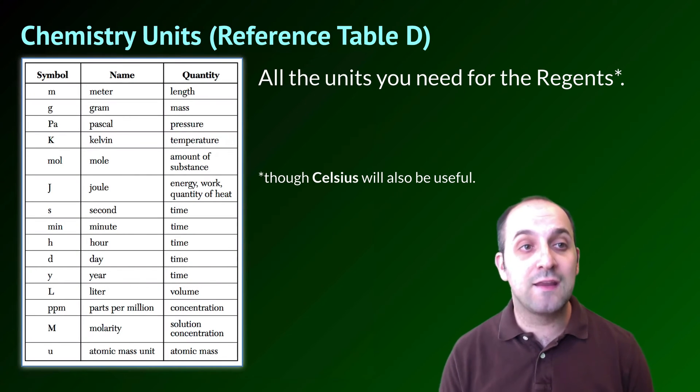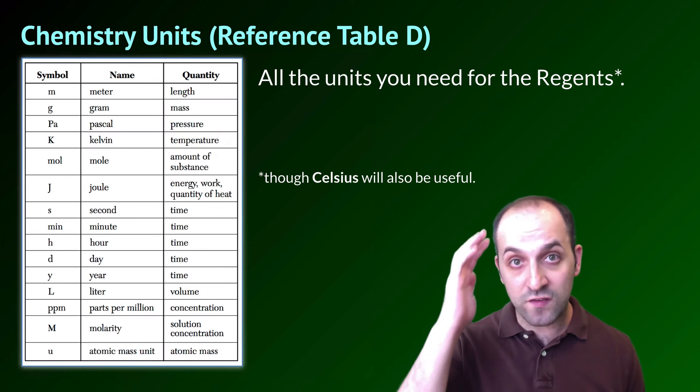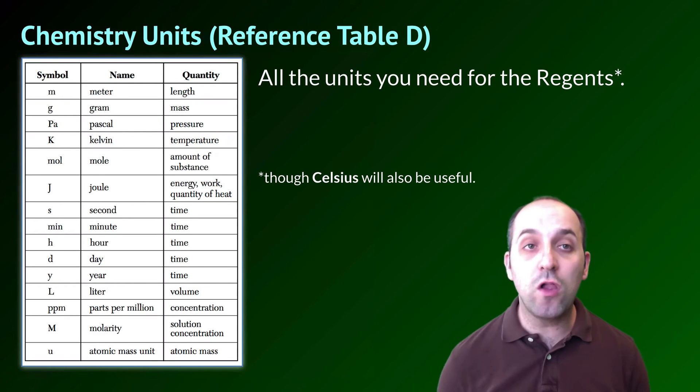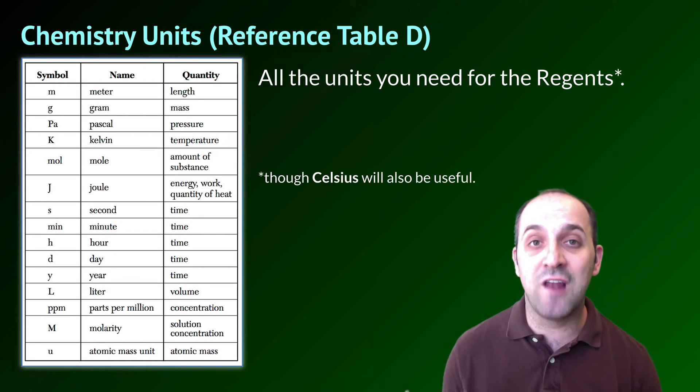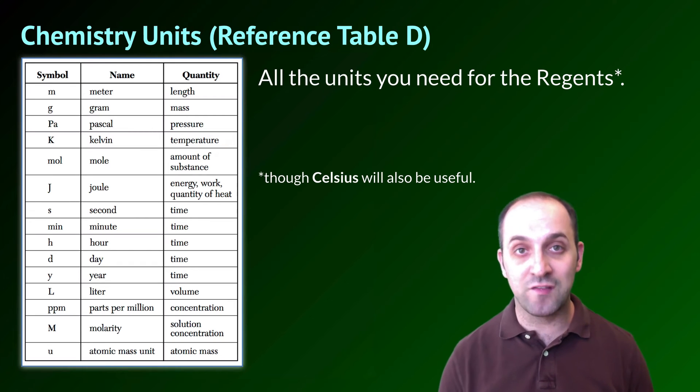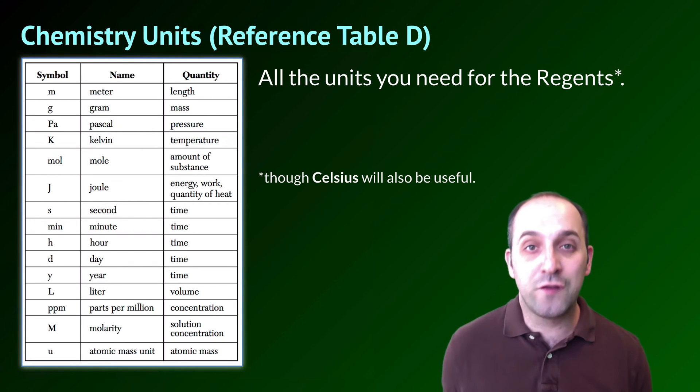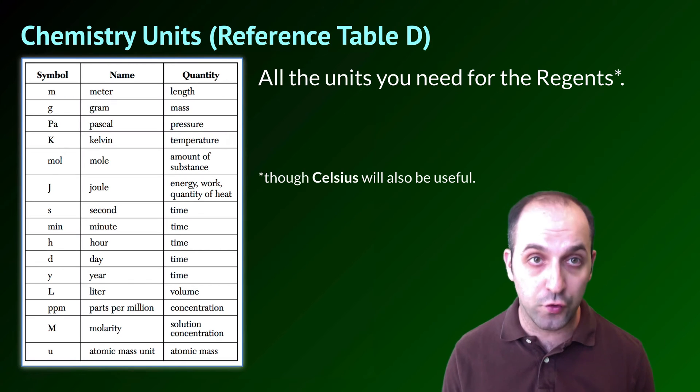The first is that reference table D in the New York State chemistry reference tables is all of the chemistry units that you're going to need over the course of your year in chemistry. Although Celsius isn't on this table and you'll probably be using Celsius quite a bit as well, you could use Kelvin for everything, but a lot of times then you just have to convert out of Celsius and there really won't be a point. So even though Celsius is not on this reference table, these are all of the units that you'll be expected to use over the course of your chemistry investigation, which I think is really nice that New York State gives those all to you.